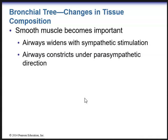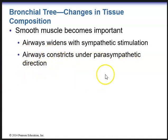Smooth muscle becomes important in the smaller airways. Under sympathetic stimulation, smooth muscle helps widen airways — important in the fight-or-flight response, allowing more air and oxygen to the muscles. Under parasympathetic direction, smooth muscles help with constriction of airways — this is the rest-and-digest function.